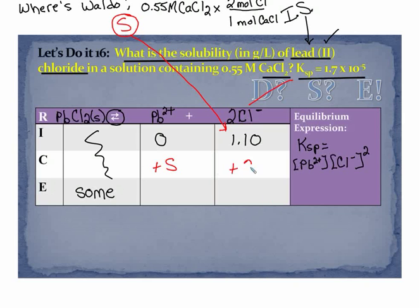Now we're going to follow just like what we did before. Plus 2s. This is s. This is 1.10 plus 2s. Now I'm going to do my neglecting test. So is the number in front of the addition or subtraction that we have here greater than 100 times K? That's my question.